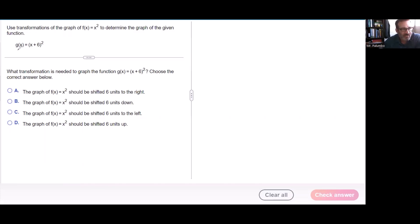We're going to graph g(x) here. Our function f(x) is our basic shape, which is x squared, which we know is a parabola, or I like to call it a smiley face.